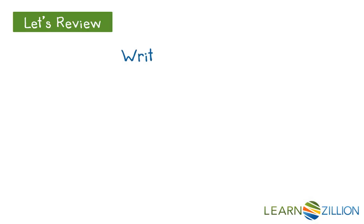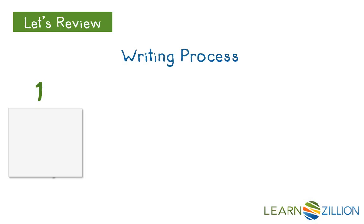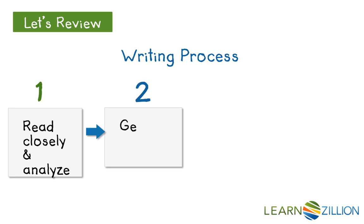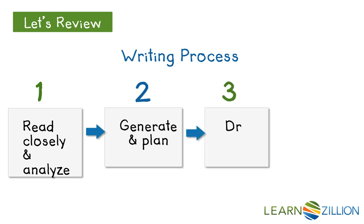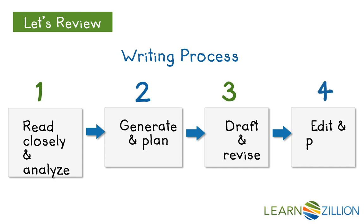Let's review the writing process. The first step is to read closely and analyze the text you're writing about. The second step is to generate and plan what you're about to write. The third step is to draft and revise your writing. The fourth step is to edit and publish what you've written.